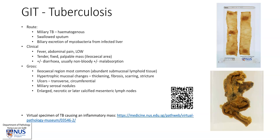This example I have shown you is ulcerative TB. There is another form — hypertrophic TB — where you can get lots of chronic inflammation, mucosal distortion, and this can give rise to an inflammatory mass that may even mimic malignancy. Where there is ulceration, the ulcers are often transverse as we saw, and there may also be some miliary serosal nodules. The mesenteric lymph nodes can also be infected, giving rise to enlarged and necrotic lymph nodes, which can calcify later.